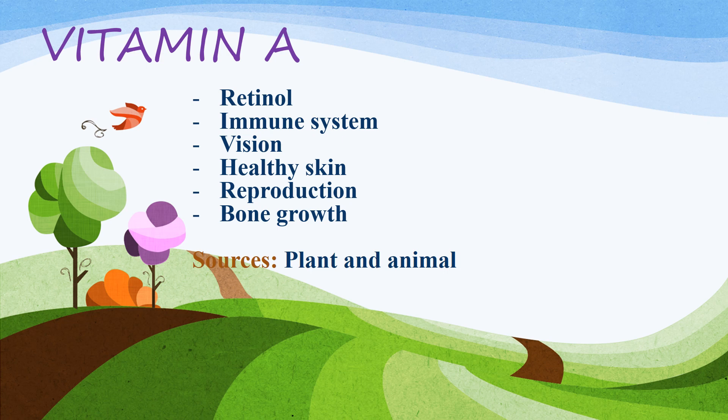Sources of Vitamin A: plant sources include orange and yellow fruits and vegetables such as carrots, capsicum, mangoes, sweet potatoes, and leafy vegetables such as spinach, peas, and broccoli. Animal sources include liver, eggs, and some fortified milks. Requirements: 900 micrograms for men and 700 micrograms for women.